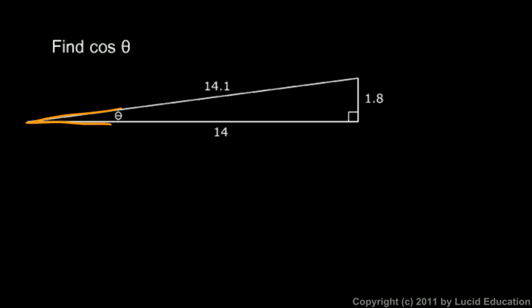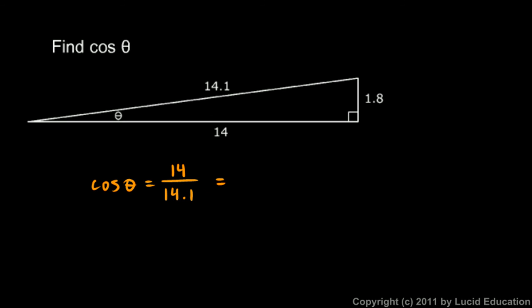Here are some quick examples demonstrating these ideas. Find the cosine of theta — here's theta, a really small angle. The cosine will be the adjacent side divided by the hypotenuse, which is 14 over 14.1. This should be a number that's very close to 1 but just a little bit less. On the calculator that comes out to about 0.993, which is indeed close to 1 but just a little bit less.